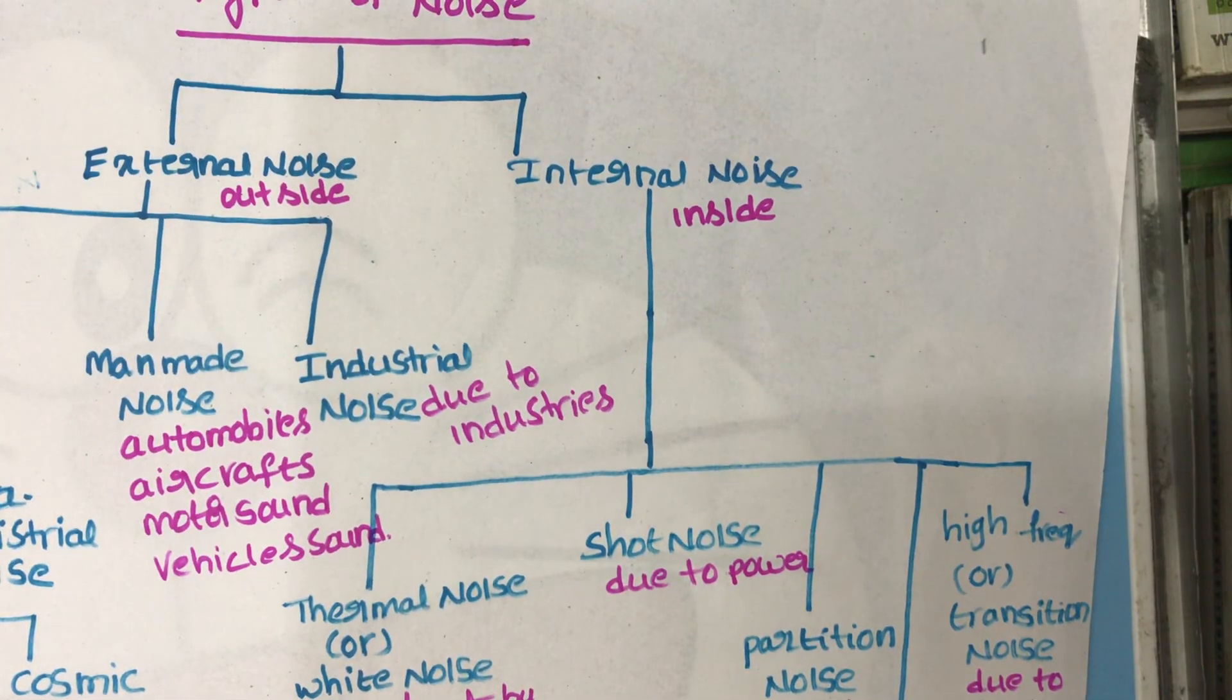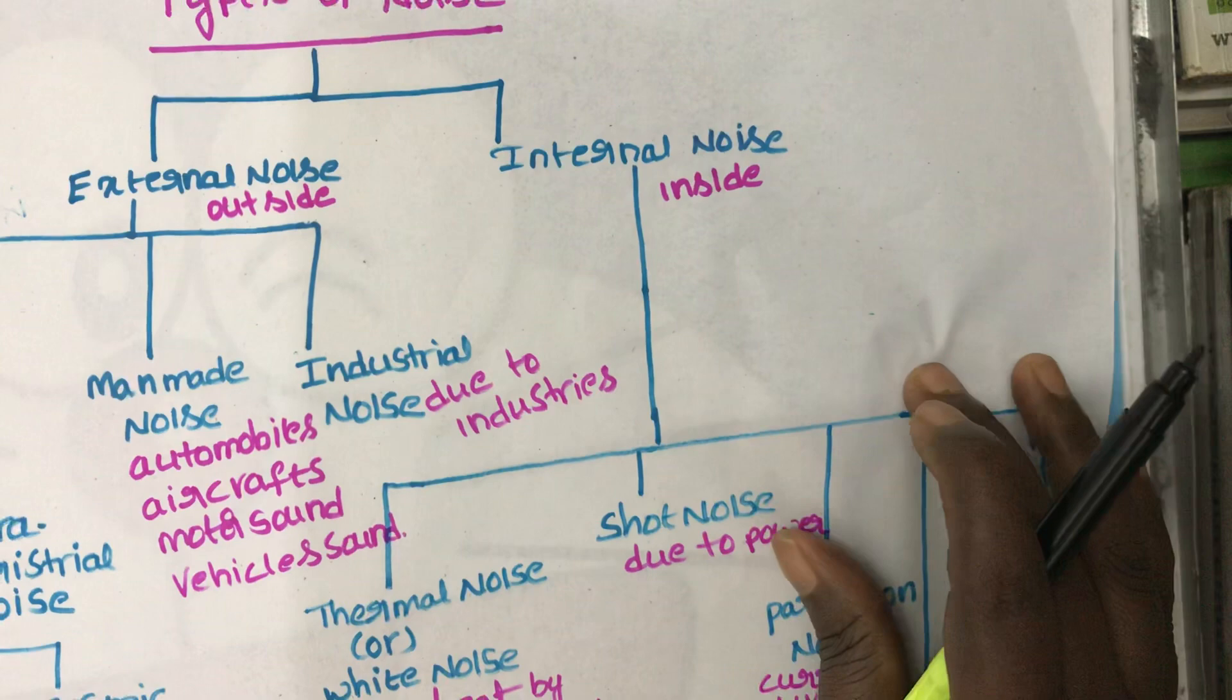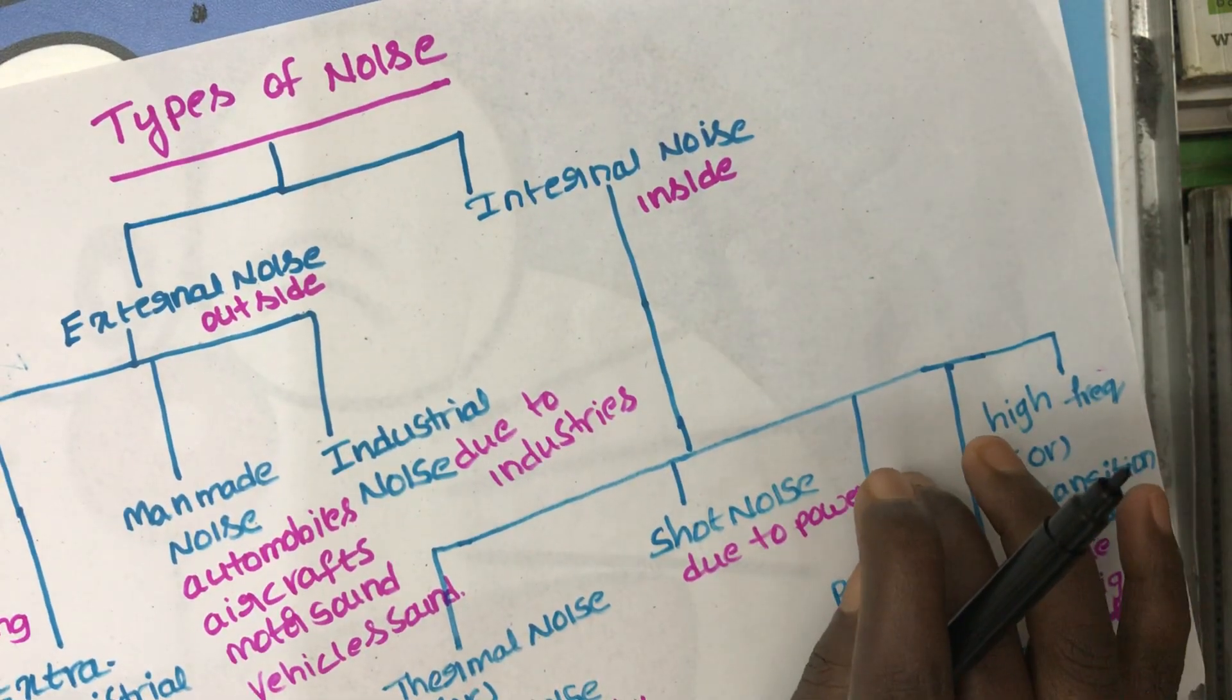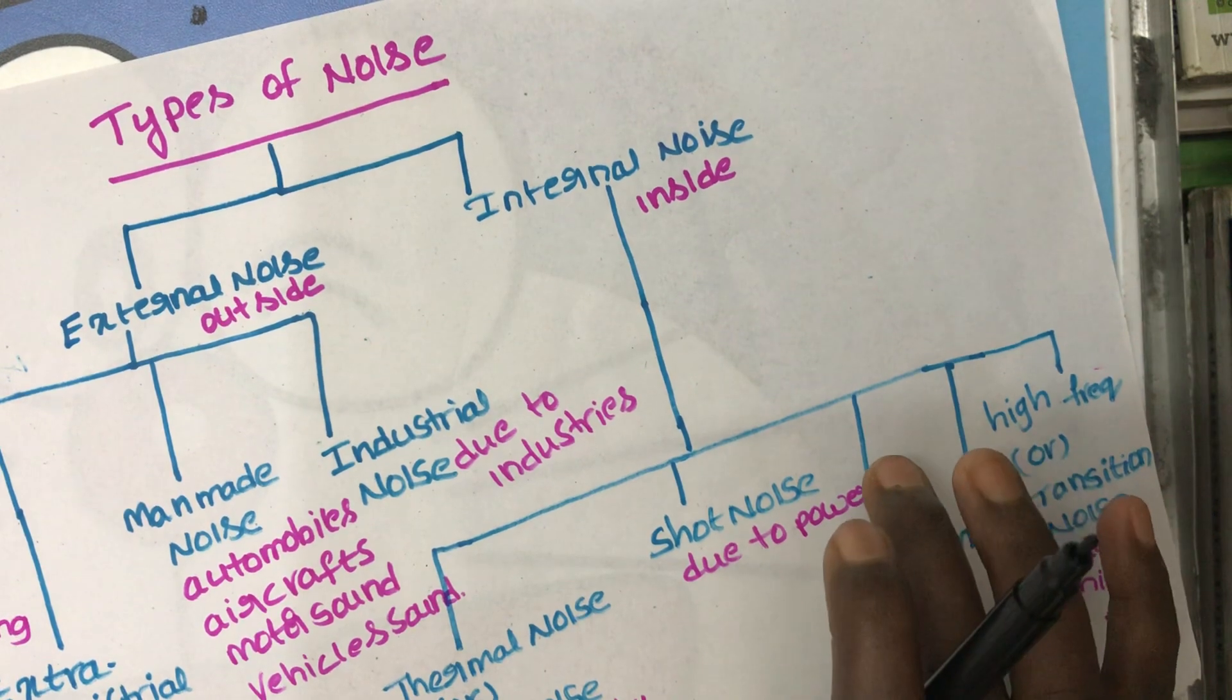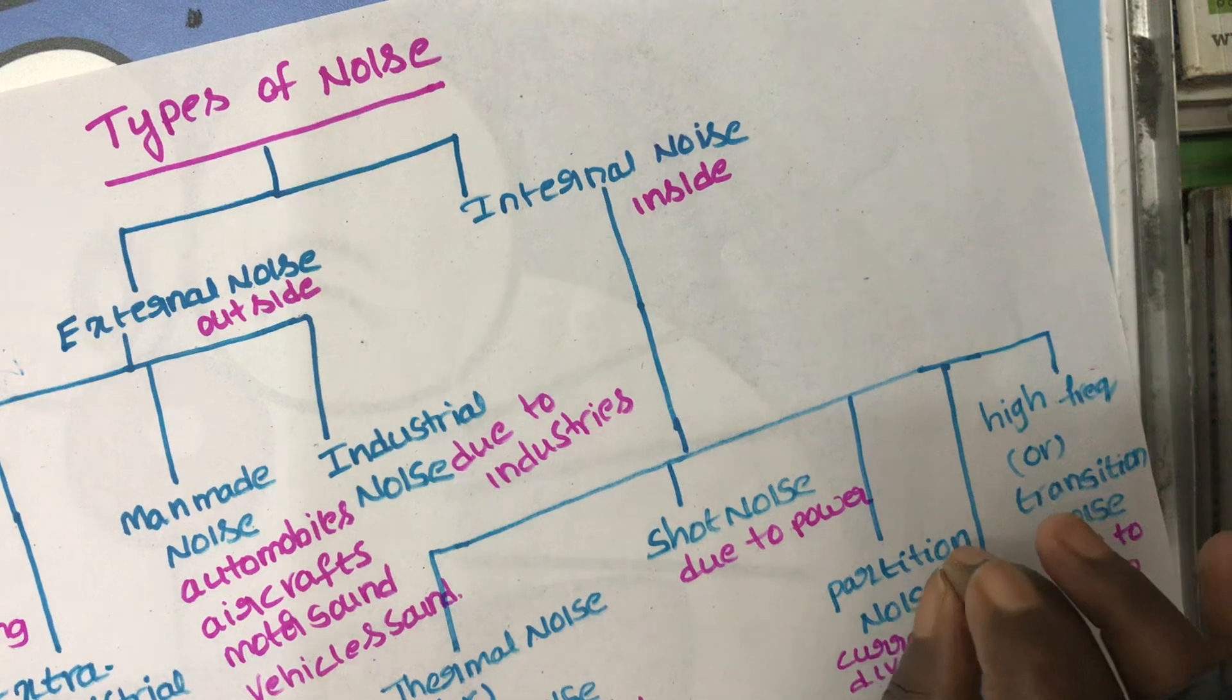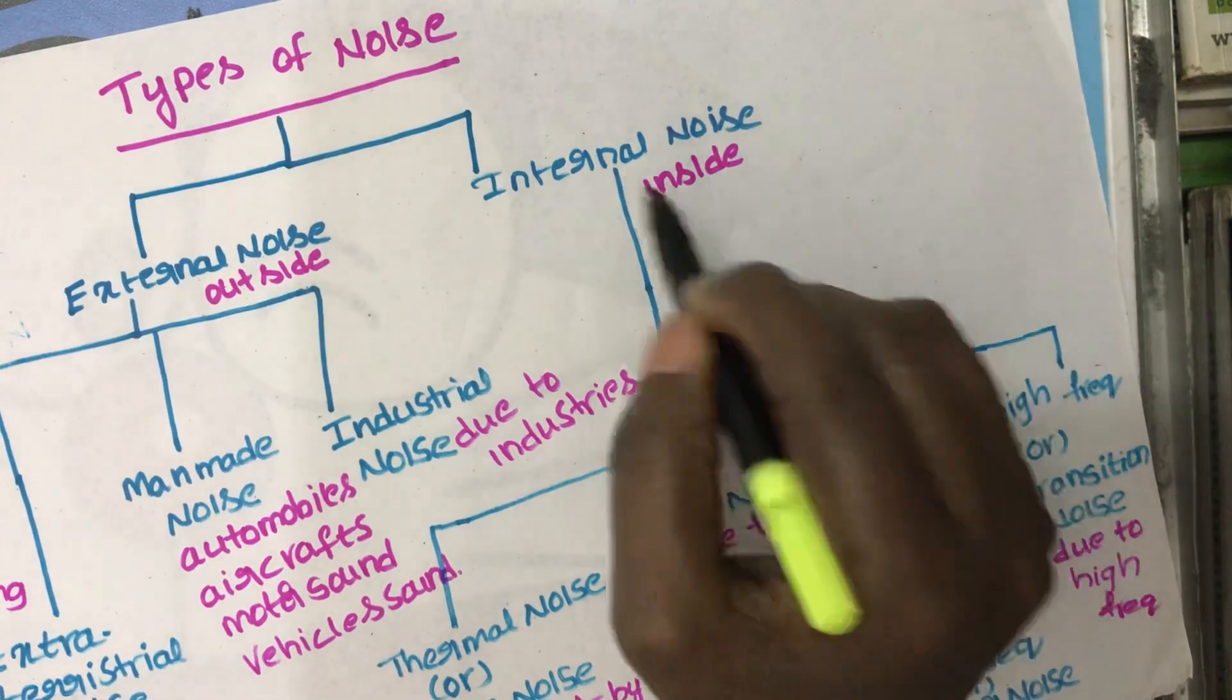External noise happens outside the instrument. Internal noise happens inside the instrument. If you take any electronic instrument, the noise which is happening outside the instrument is called external noise. The noises which are happening internal is called internal noise.